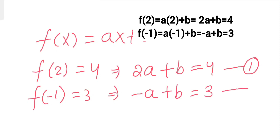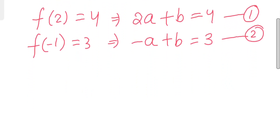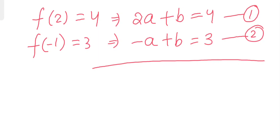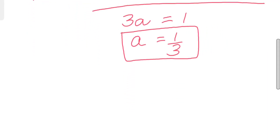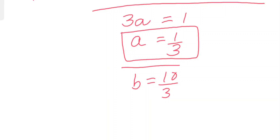Now if we solve equation 1 and equation 2 — subtract equation 2 from equation 1 — we get 3a equals 1, so a equals 1 by 3. Substituting the value of a back in, we get that b equals 10 by 3. So we have found the values of a and b.